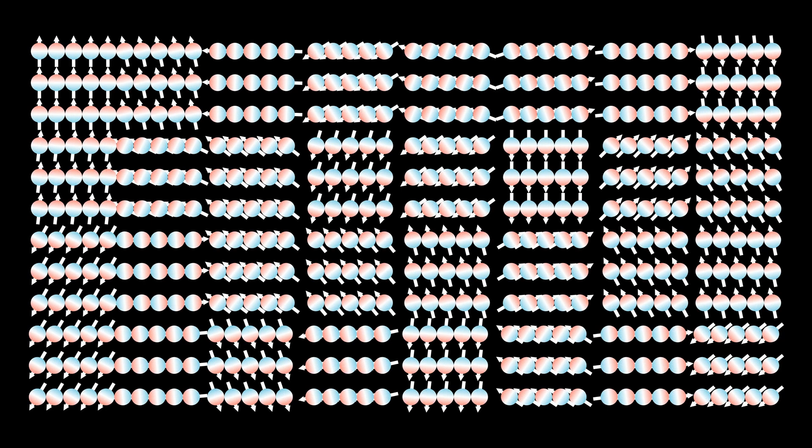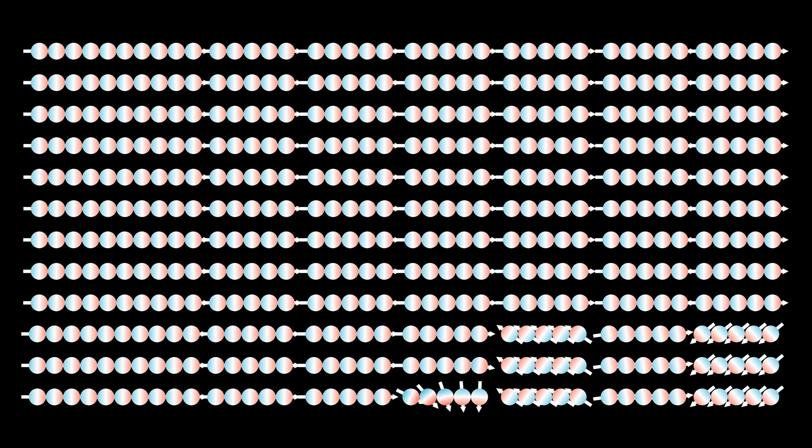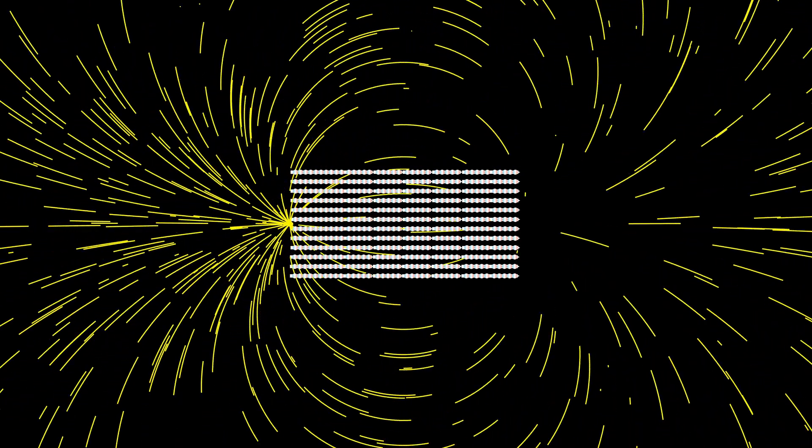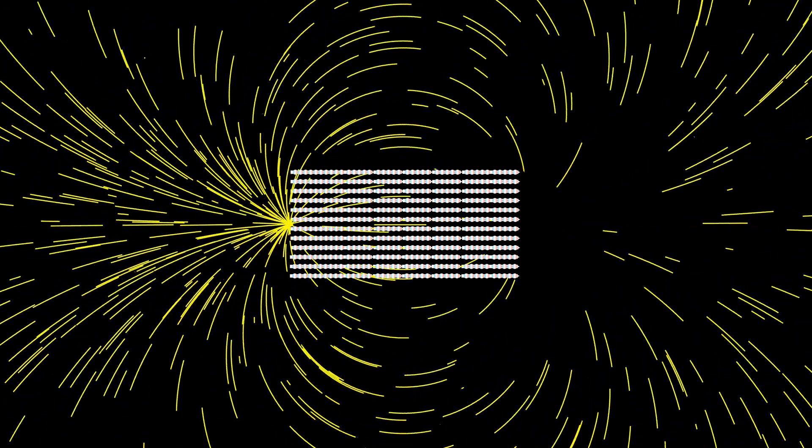However, if you apply a strong external magnetic field, you can force these domains to align in the same direction. Now, all the tiny magnets in all of those domains work together, creating a bigger, more noticeable magnet. That's how you make a permanent magnet.